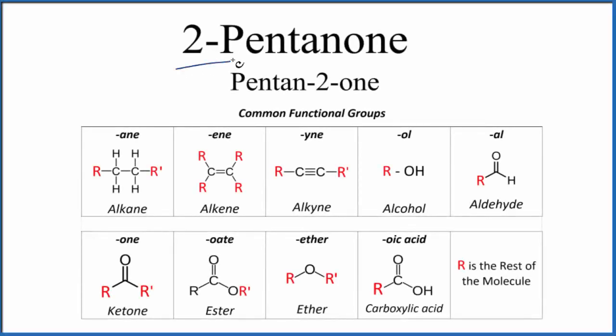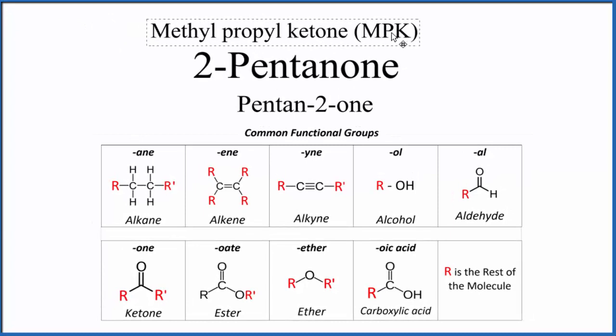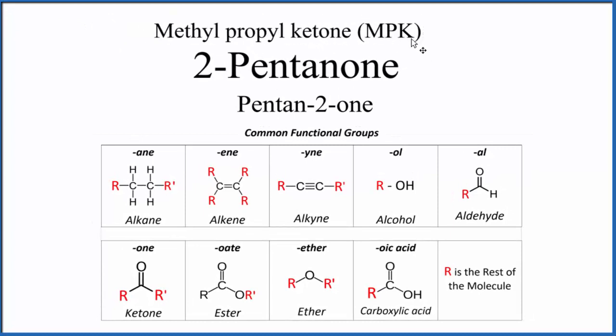Let's write the structure for 2-pentanone. This is also called pentan-2-one. This is the preferred IUPAC name. You'll also hear it called methyl propyl ketone or MPK. Let's work with these two here though.